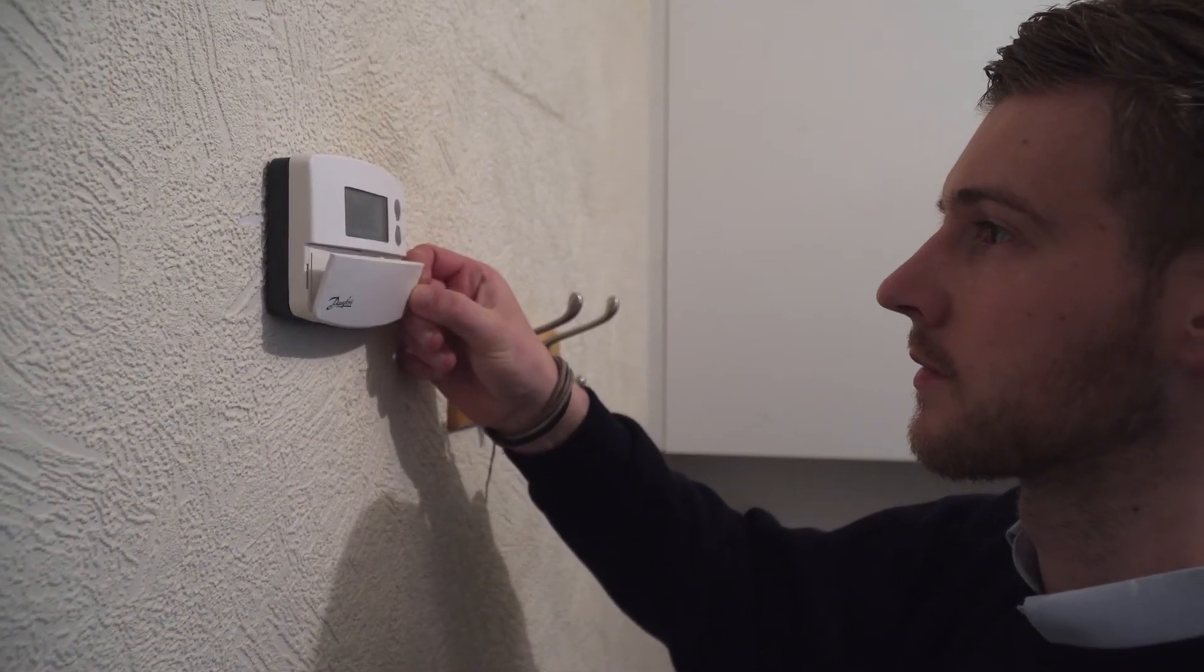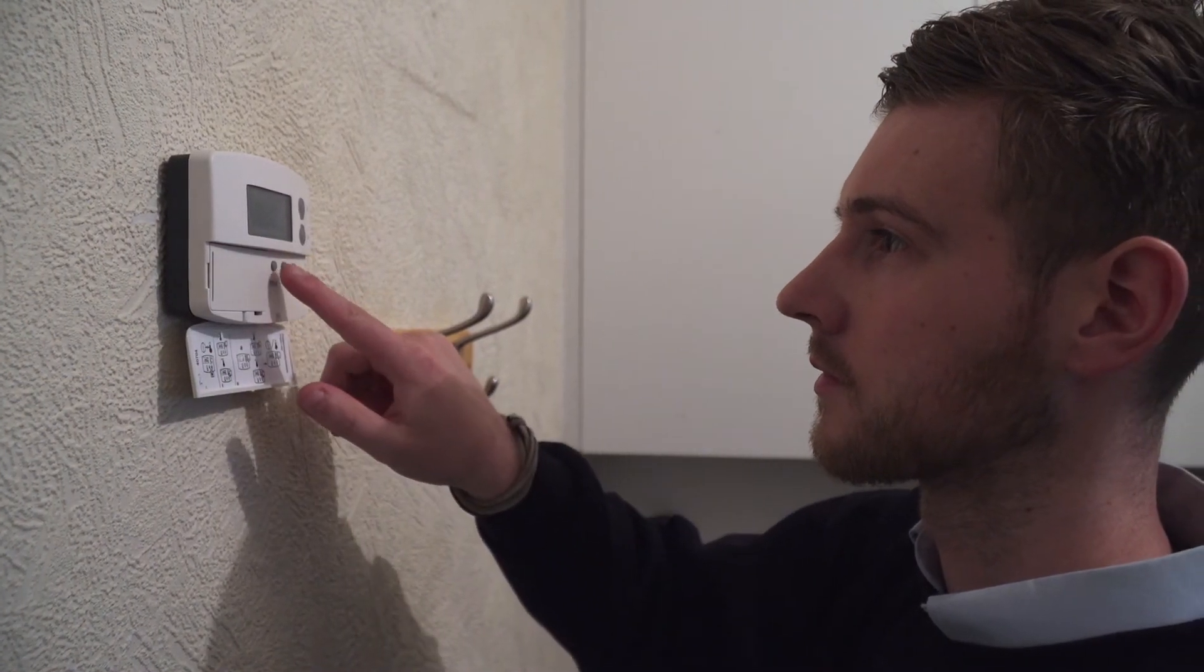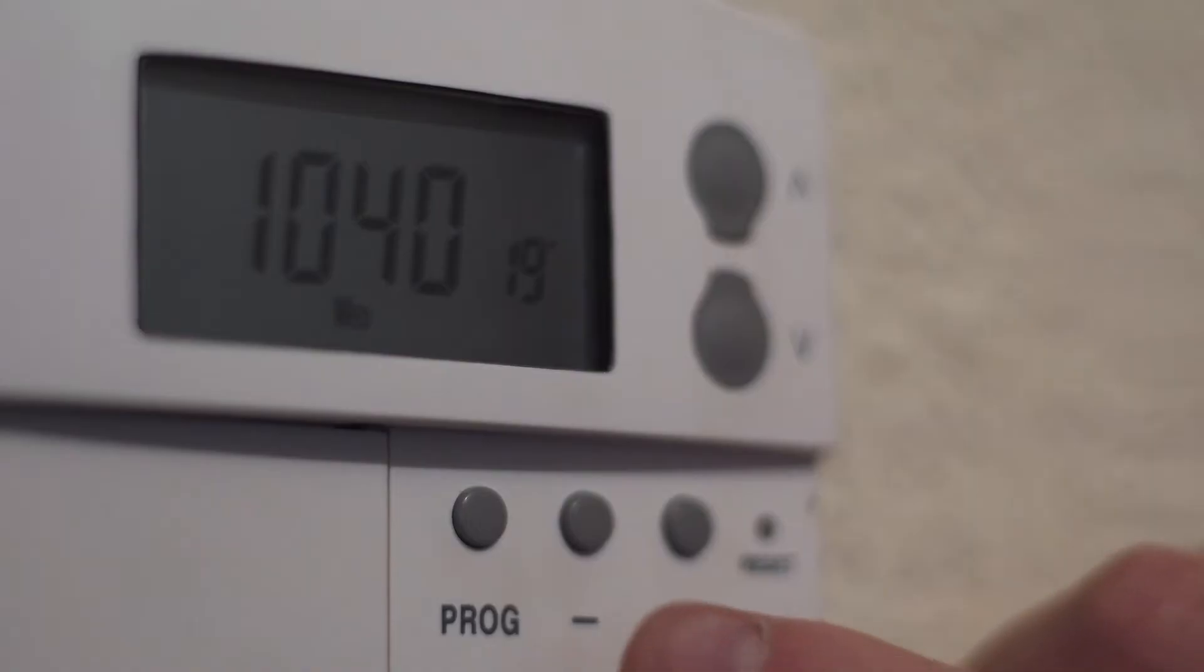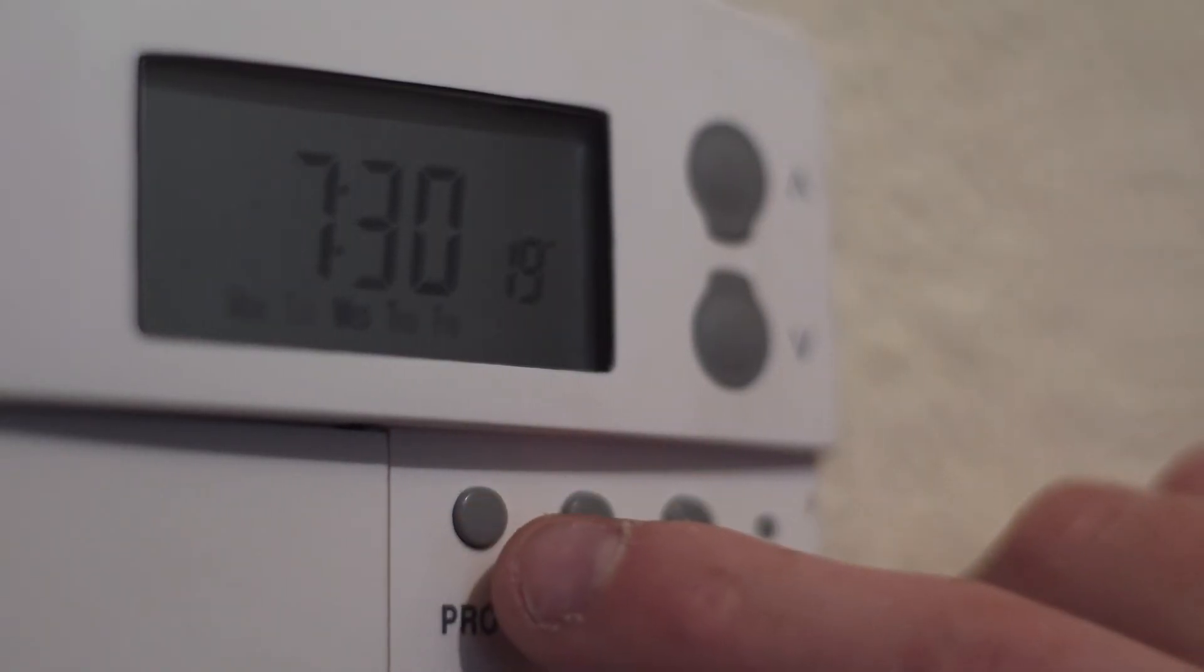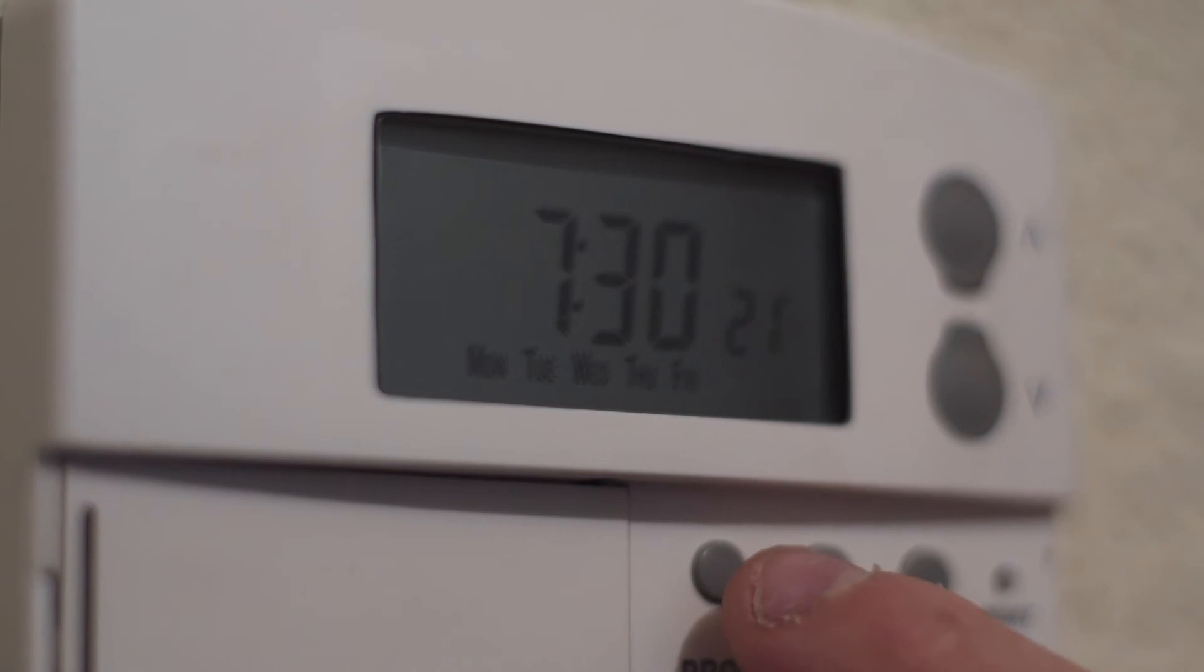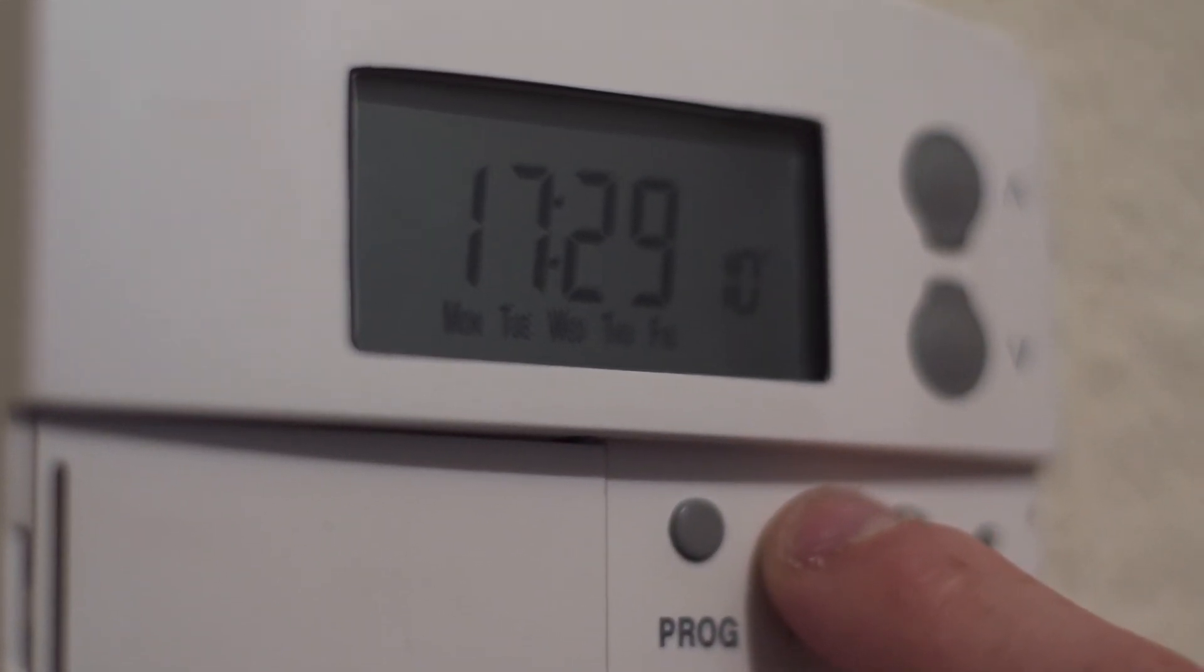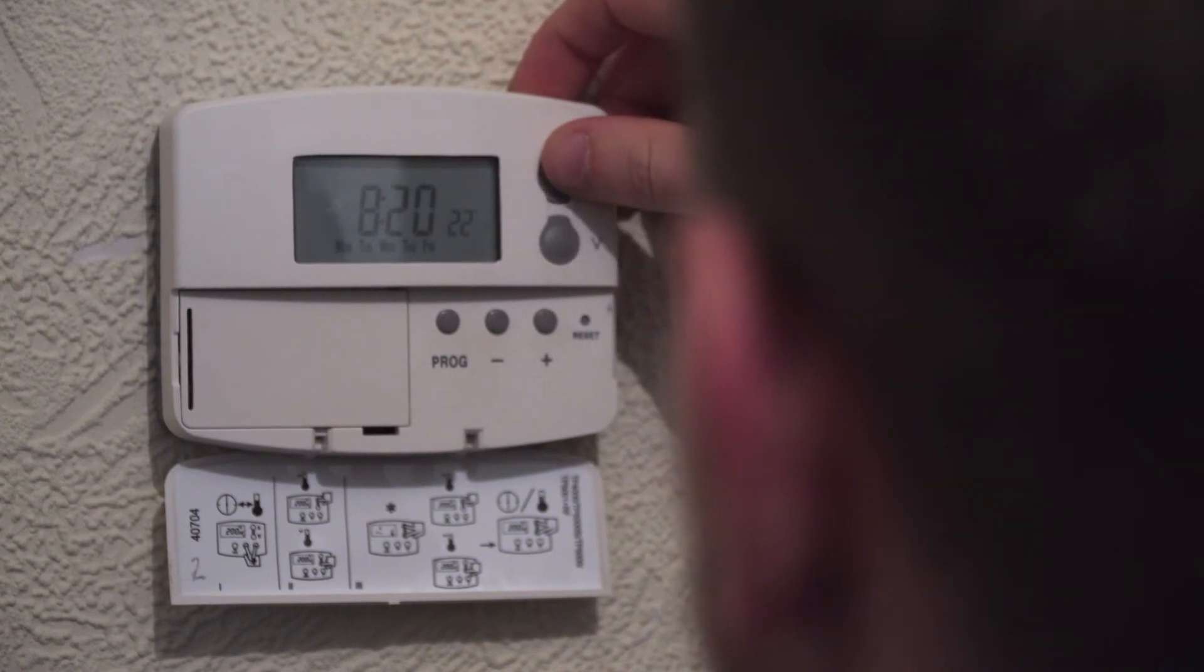Preset heating profiles are already programmed into the unit, which often suit most people. But to set your own time and temperature programs, press the PROG button until the first preset time and temperature. Then press the plus and minus buttons to adjust the time, and the up and down buttons to adjust the temperature accordingly.